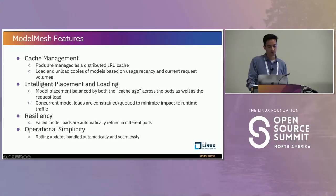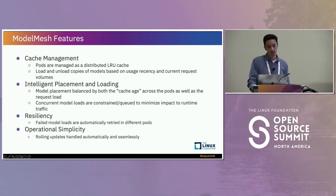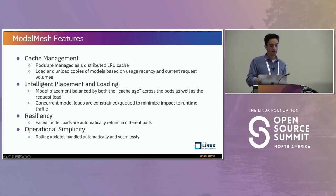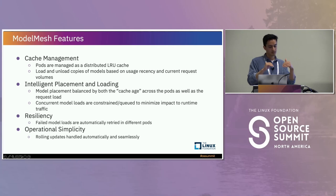Then we get into intelligent placement and loading — ModelMesh can scale out models across pods as well. If a model has a large request volume, it can make several copies of that model to handle those requests. There are also things baked in like resiliency and simplicity: failed model loads are automatically retried in different pods. Rolling updates are handled automatically — there's an inference service in KServe and ModelMesh which is the mapping from a model to the pod. If you wanted to update that model or create a new version, ModelMesh will make sure the new version is completely loaded before the inference service directs any new traffic to that model.